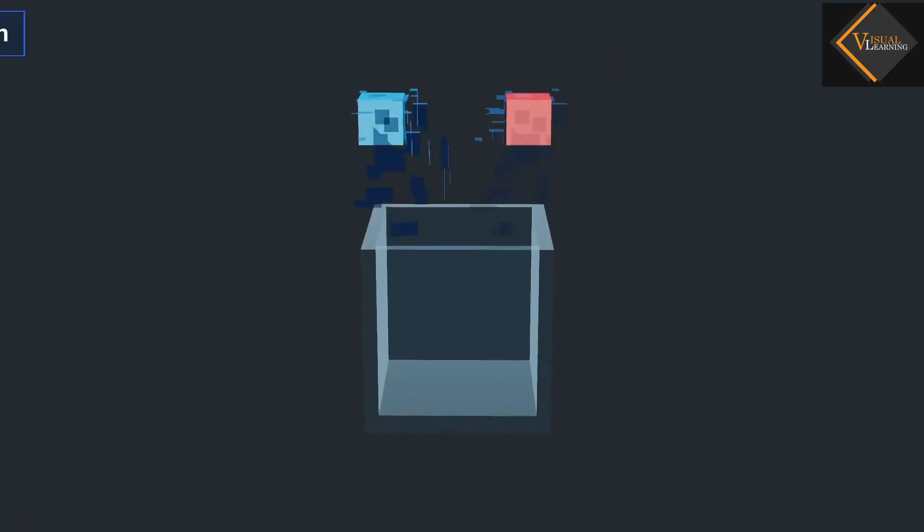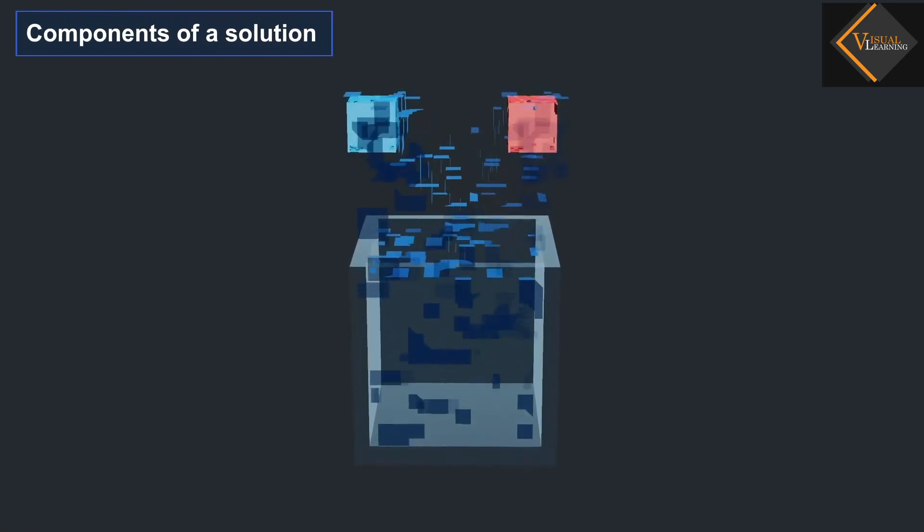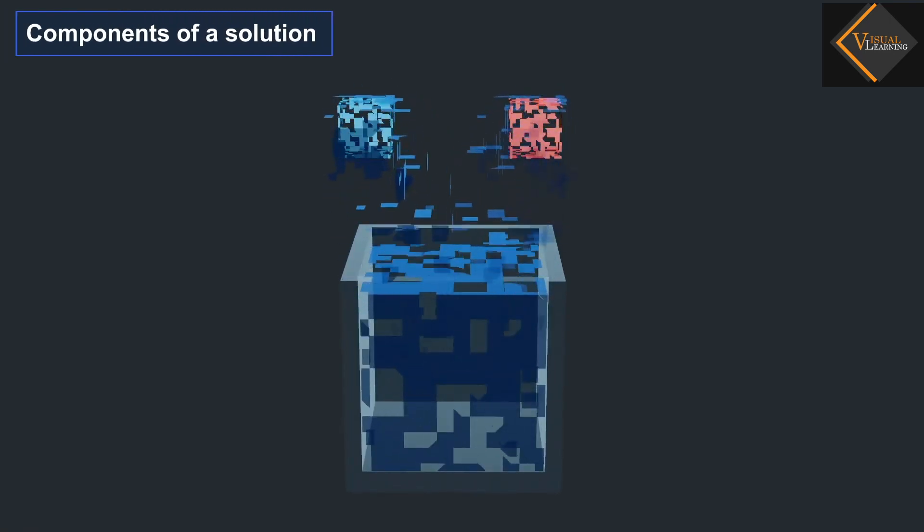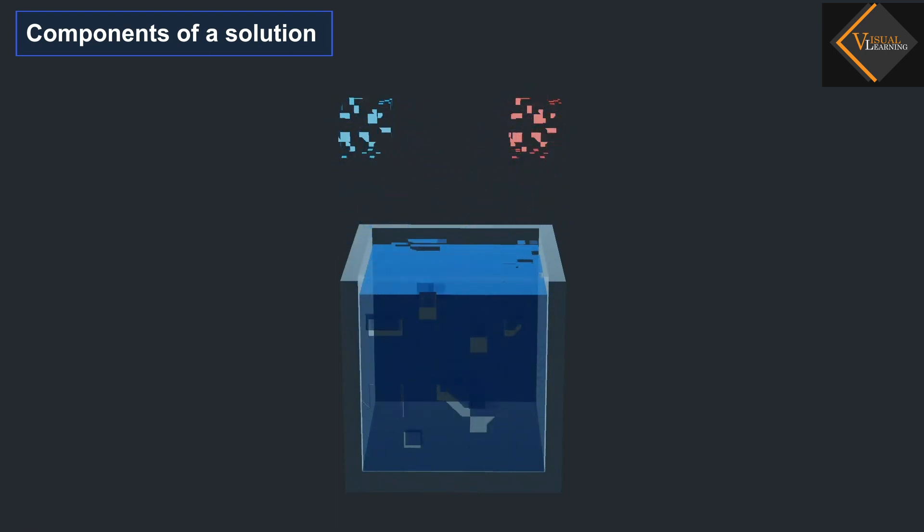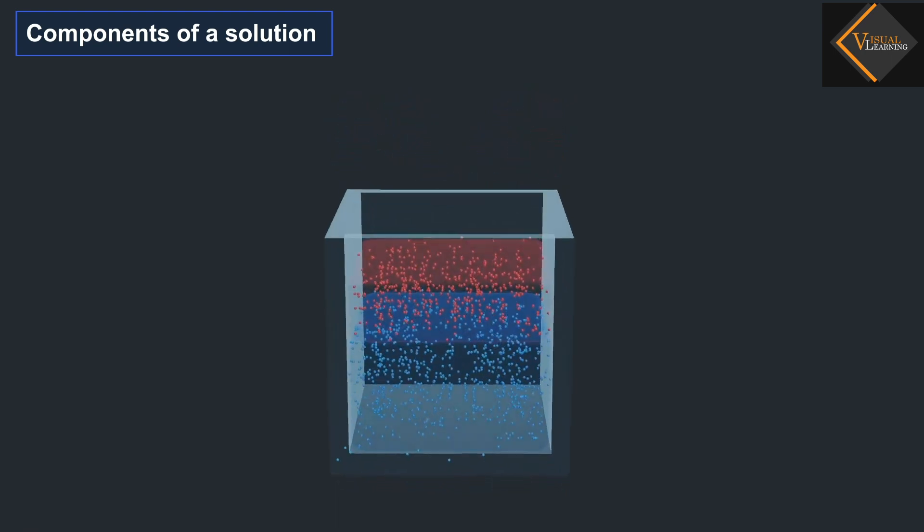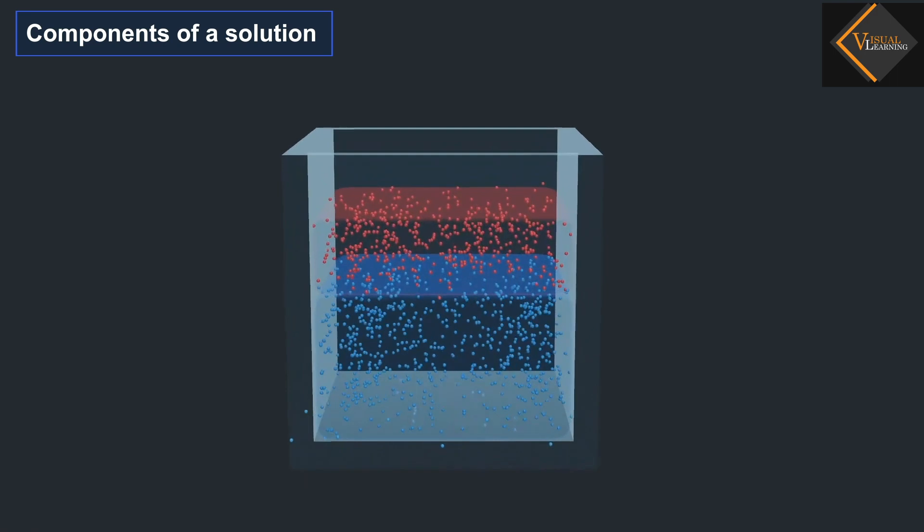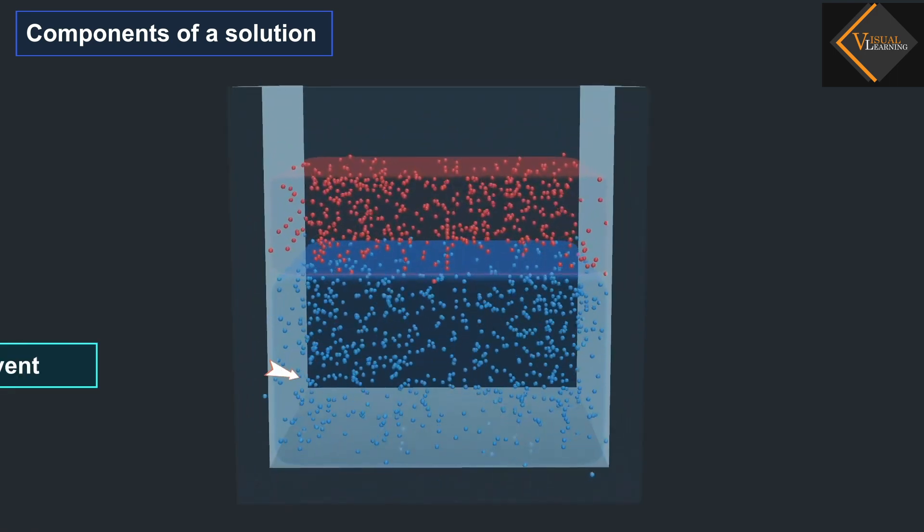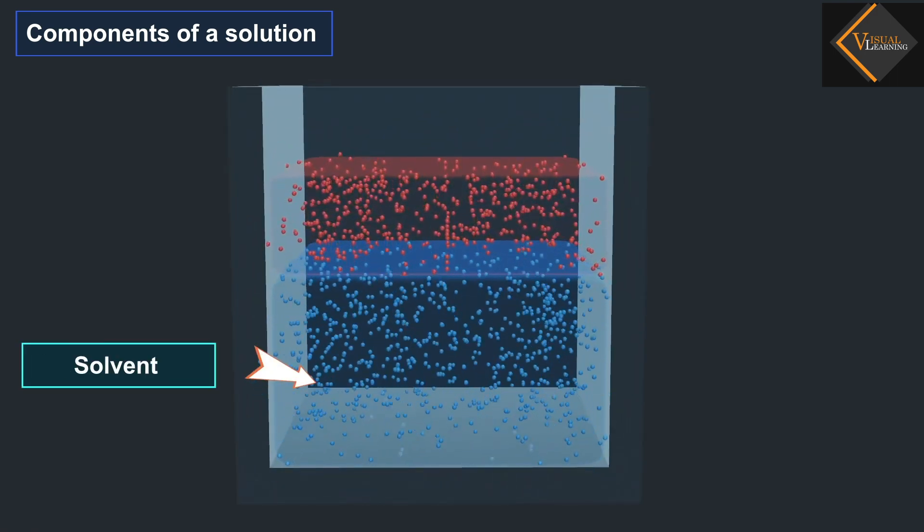The substances that make up a homogeneous solution are called components of the solution. It has basically two components: a solvent and a solute.